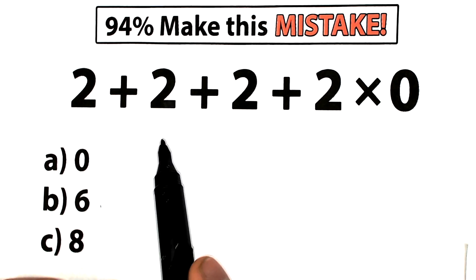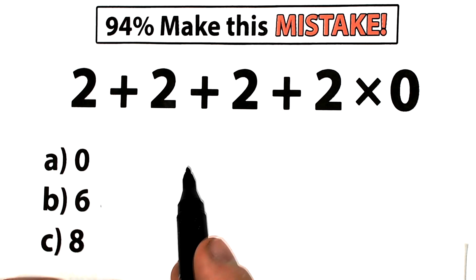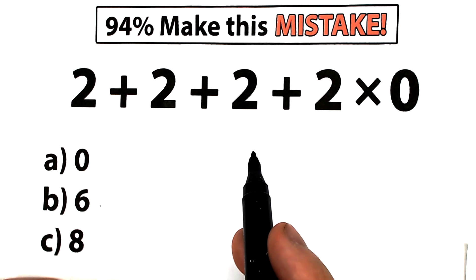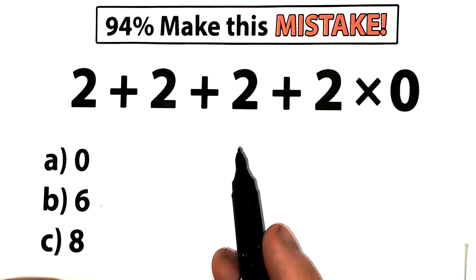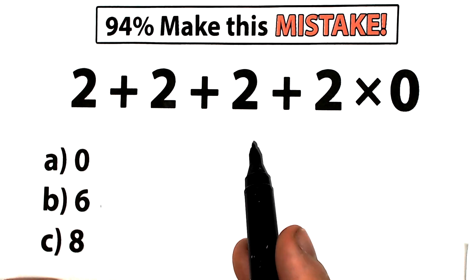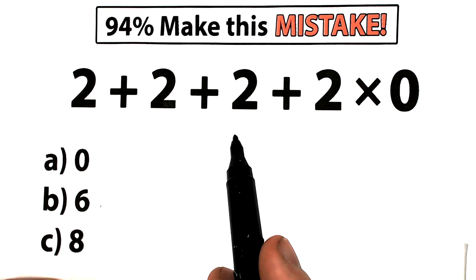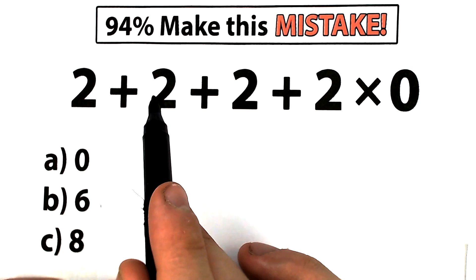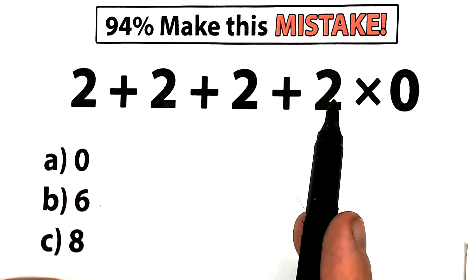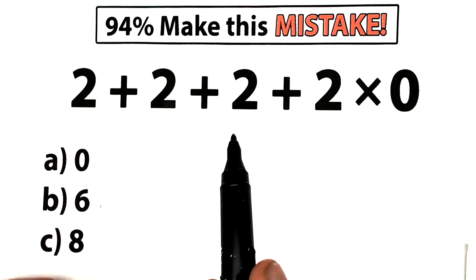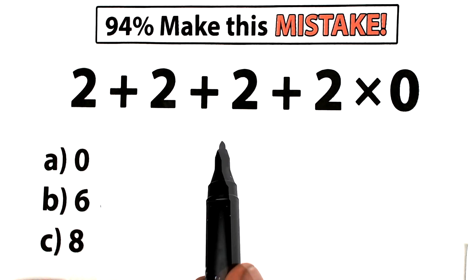This looks like a pretty easy problem, but many of you are going to get this wrong and you'll probably be a little bit shocked. Don't panic — I'm going to fully explain why you're probably going to get this wrong and how to avoid this particular mistake. Here's our question: 2 plus 2 plus 2 plus 2 and times 0. What is the correct answer? What do you think?